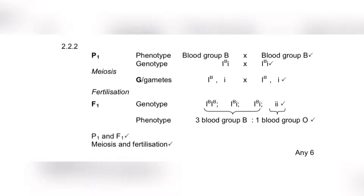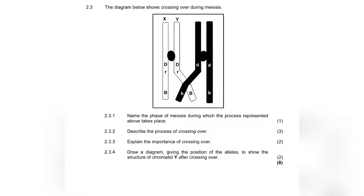Now we're going to do question 2.3, which is about crossing over during meiosis. If there is anything I can tell you about meiosis, it is that you need to know prophase I more than any other phase, because that is the most examined phase. For question 2.3.1 — name the phase of meiosis during which crossing over takes place — the answer is prophase I, and prophase I only.